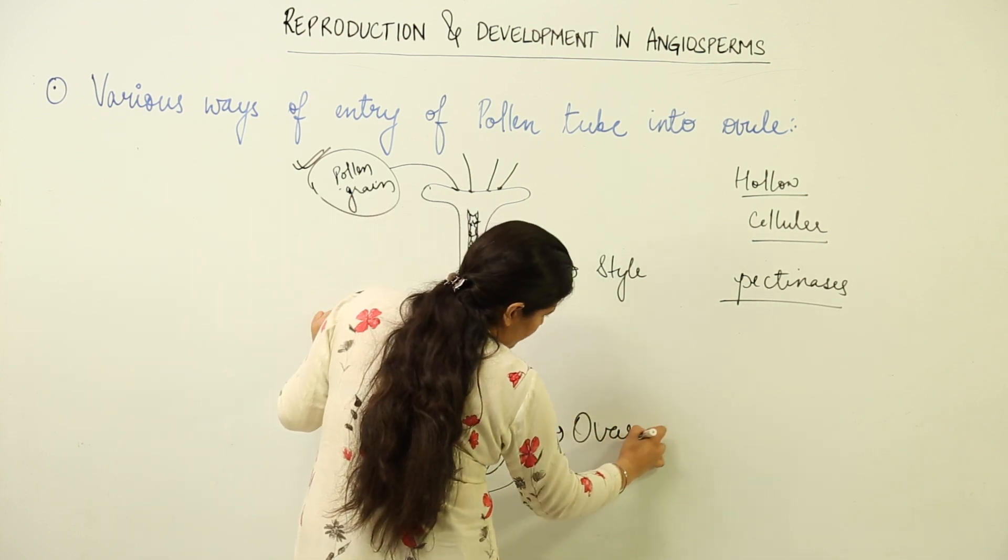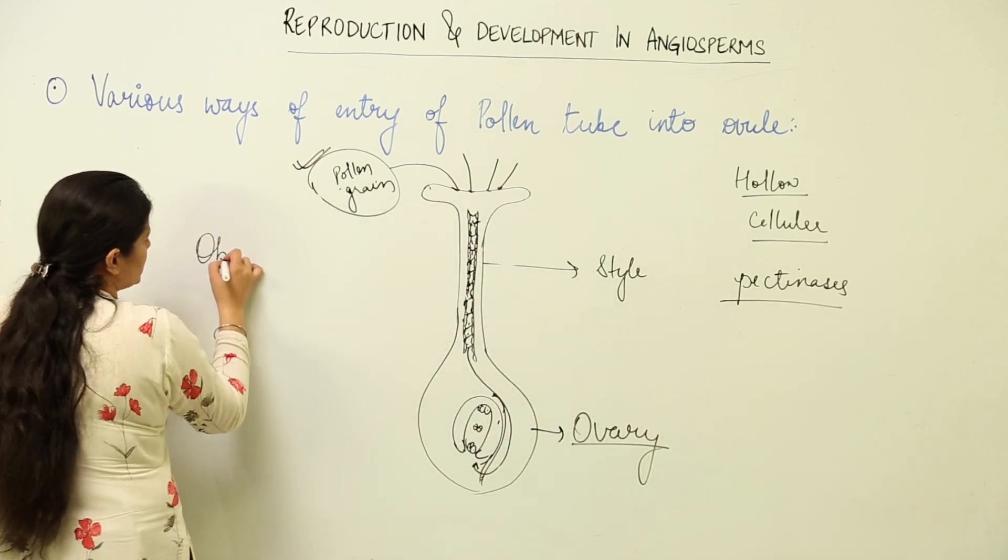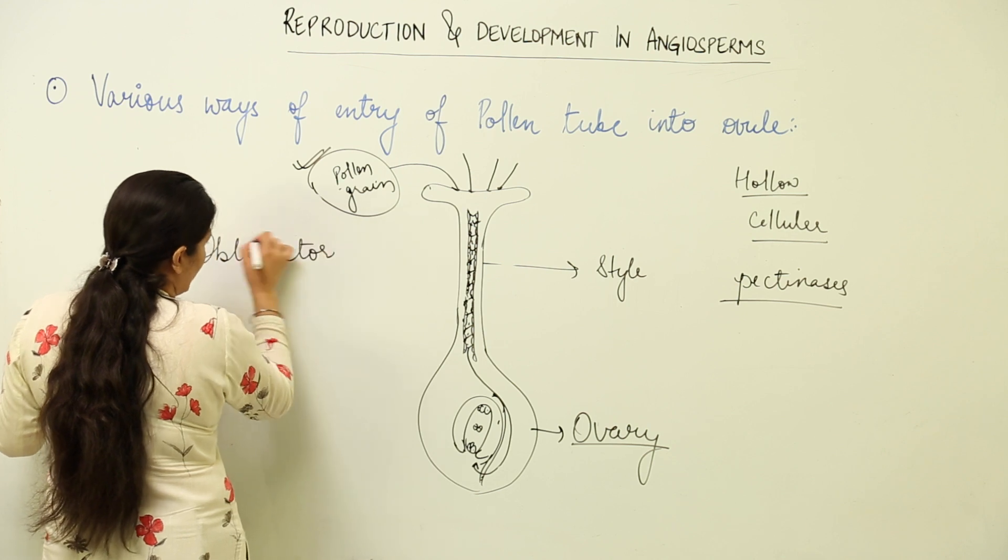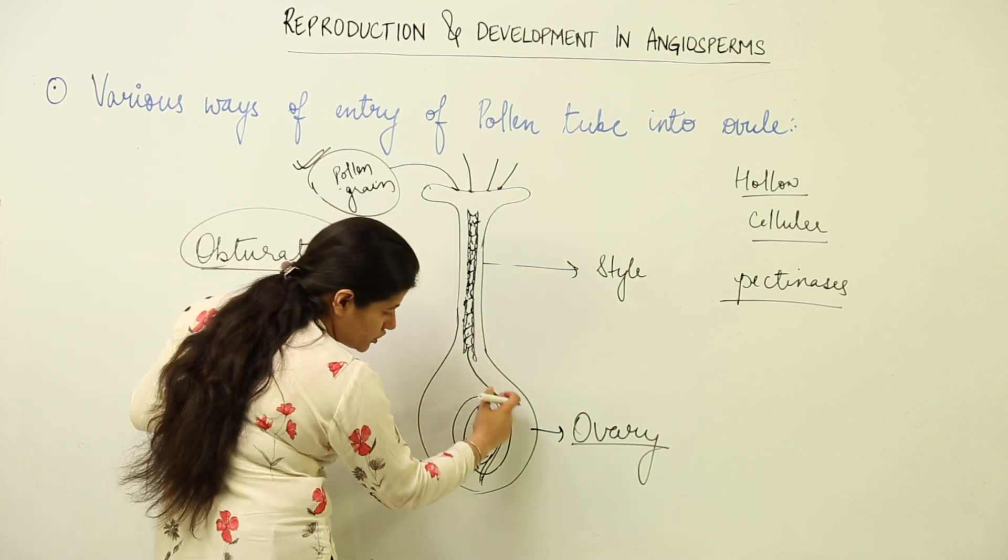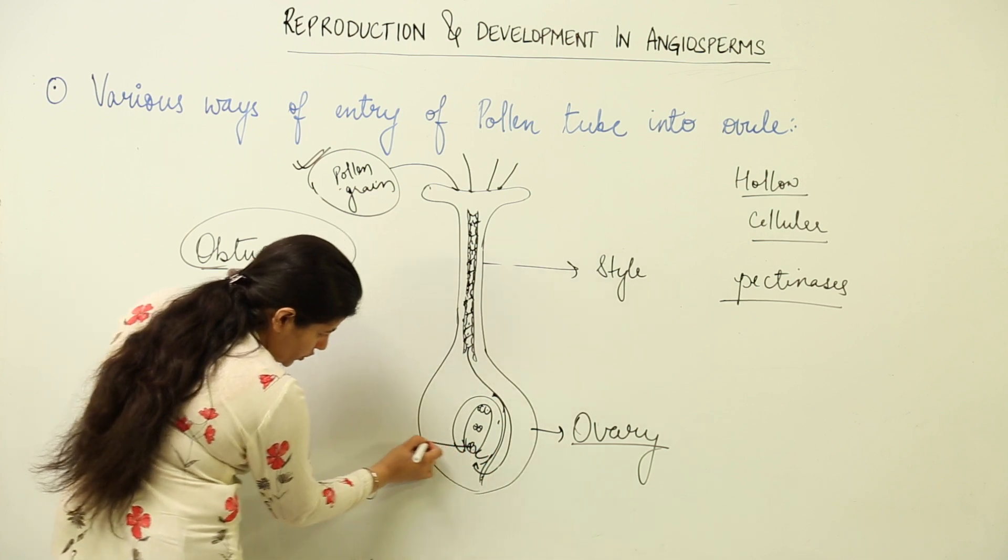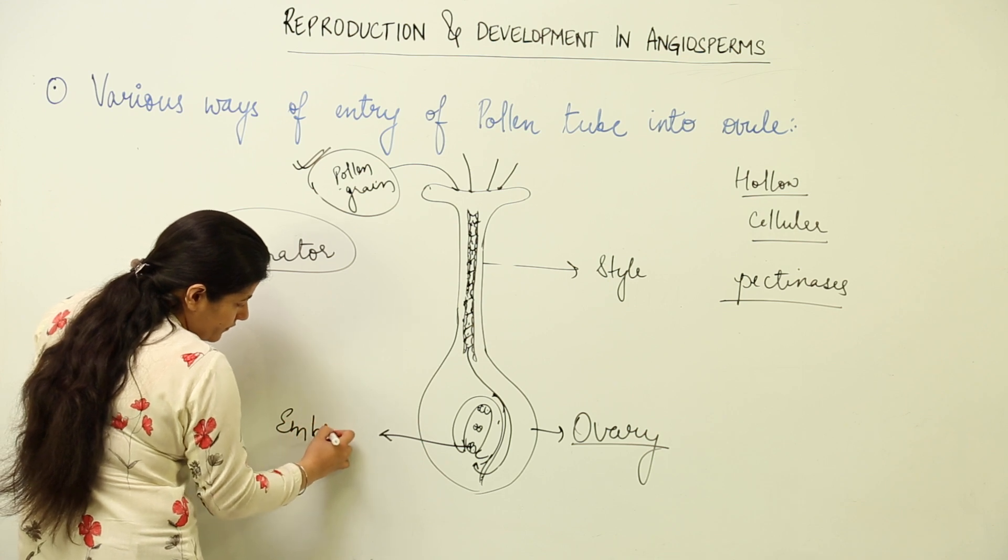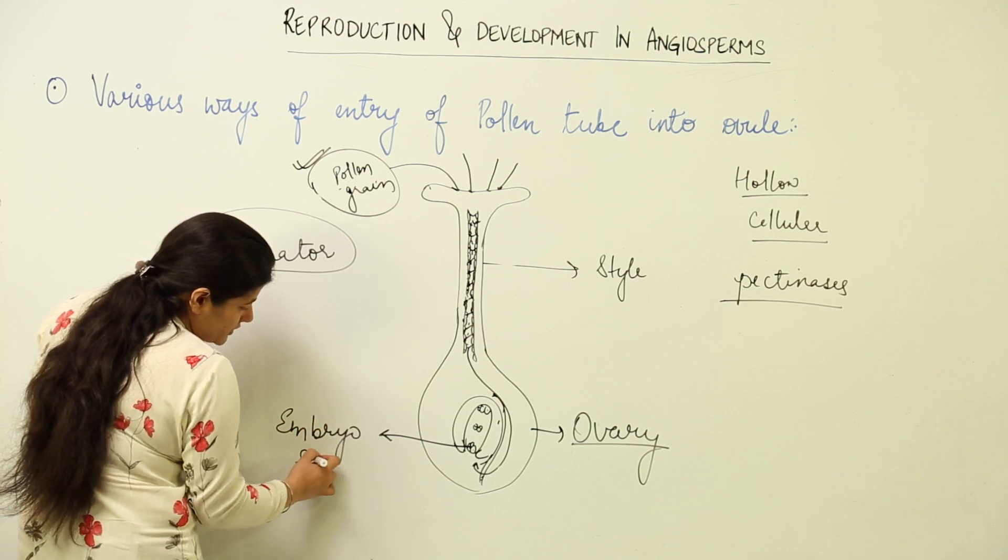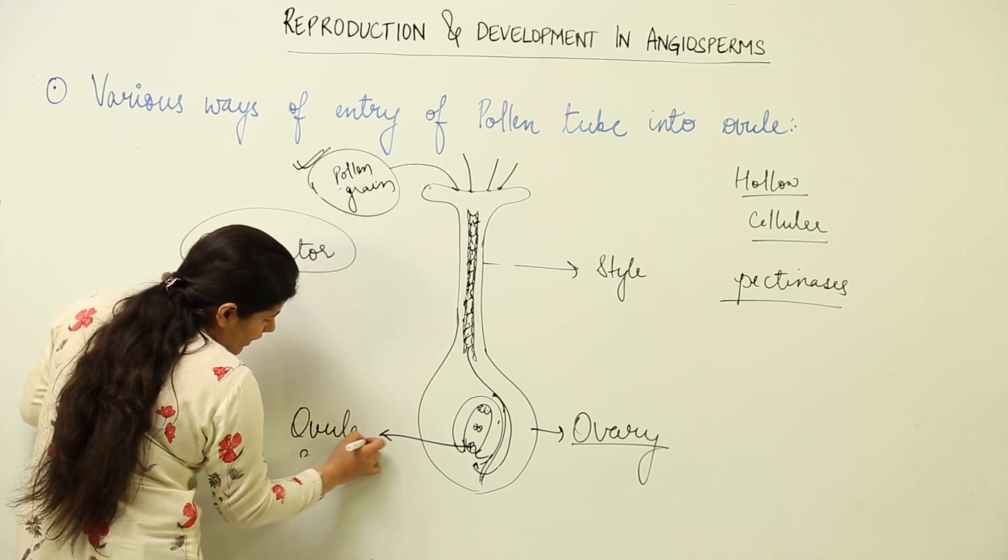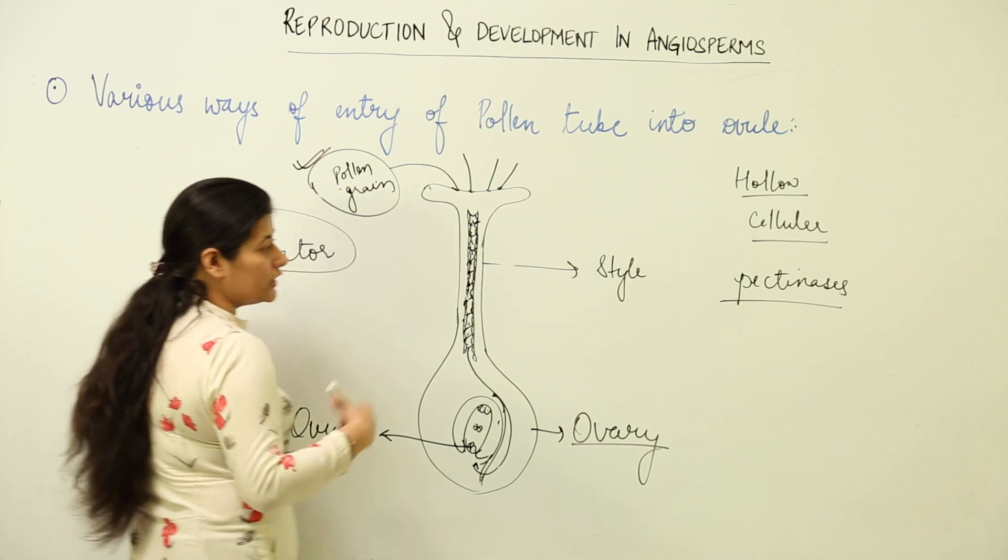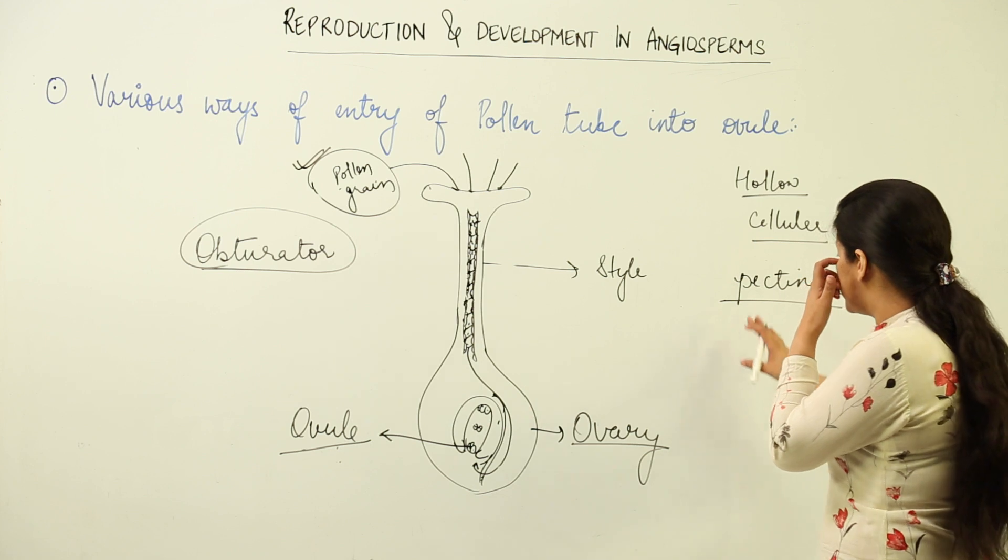The pollen tube would reach near ovary. This is the ovary part. Once it reaches inside the ovary, there is an obturator cell which helps in or assists in movement of the pollen tube to the ovule.